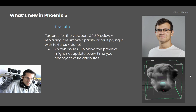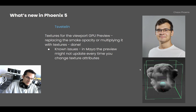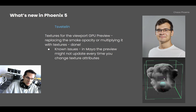Svetilin added texture support for the smoke opacity in the GPU preview, so you can now replace or modulate the smoke opacity with a texture. For example, in this viewport preview we have a large smoke preset modulated with a gradient ramp creating a hole in the smoke — basically removing parts of the opacity with the texture. There is a known issue that in Maya the preview might not update, which still needs to be fixed.